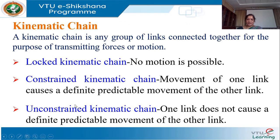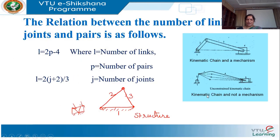To summarize: in the locked kinematic chain, no motion is possible — it transmits only forces, with trusses as an example. In the constrained kinematic chain, movement of one link causes definite and predictable movement of all other links — example: single slider crank mechanism. In the unconstrained kinematic chain, one link does not cause definite predictable movement of the other links.